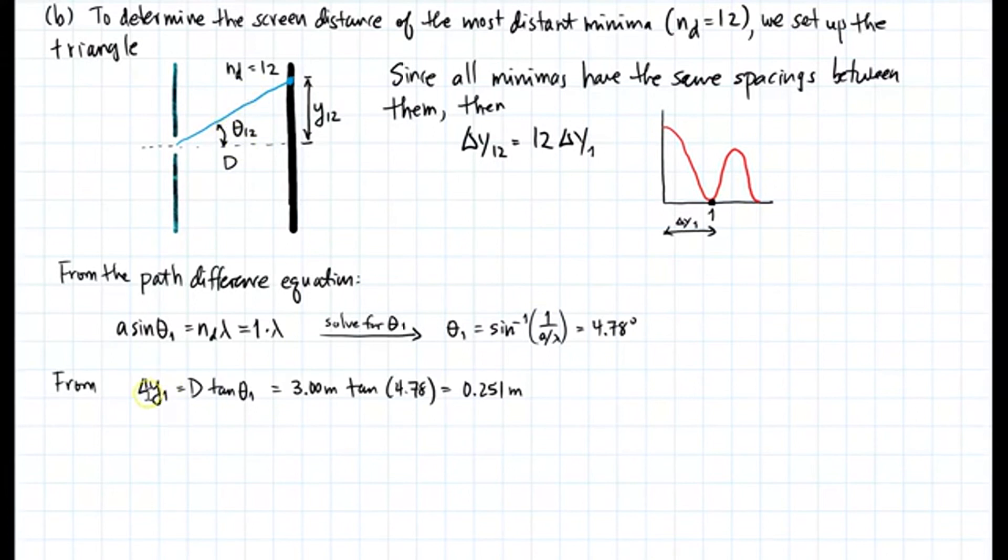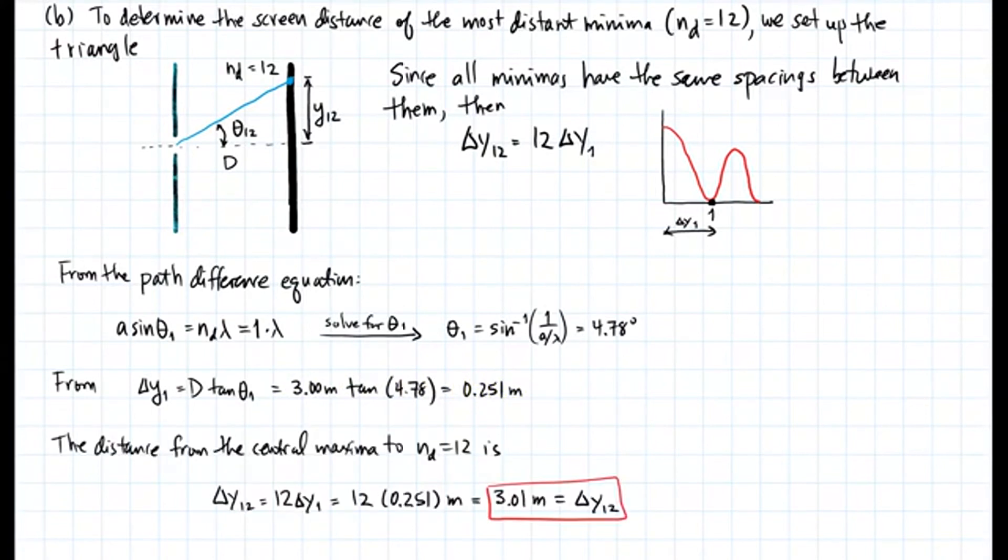From this triangle, I get delta Y1 is going to be D tan of theta 1, which is 3 times the tan of 4.78 degrees, giving 0.251 meters. The distance from the central maxima to ND equals 12 is delta Y12 equals 12 delta Y1, which is 3 meters.